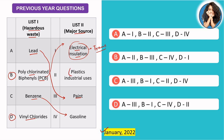Vinyl chloride may be confusing, but if you look at plastic industrial uses, polychlorinated biphenyls will not match with plastics. Vinyl chloride matches with PVC pipes, which are plastic and have industrial uses. This way, you will get option number D, which corresponds to A-third. If you have one match confirmed, you get 50-50 chances for the rest. With gasoline as the remaining match, the answer is confirmed.